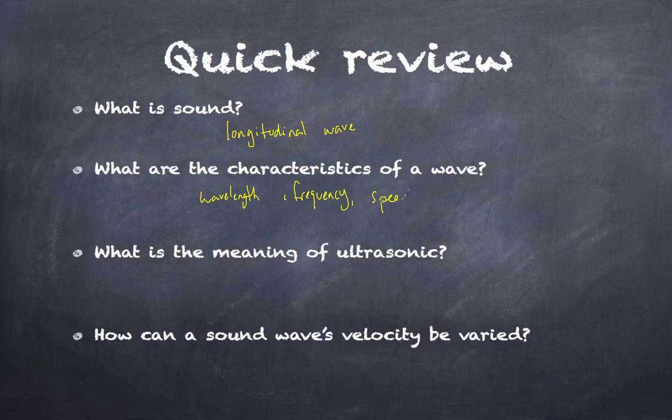What are the characteristics of a wave? A wave has wavelength, frequency, and speed. These three characteristics are related: speed equals frequency multiplied by wavelength. Frequency is the number of cycles per second, and wavelength is the length of one complete cycle.